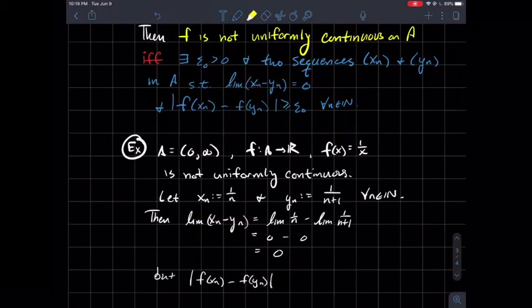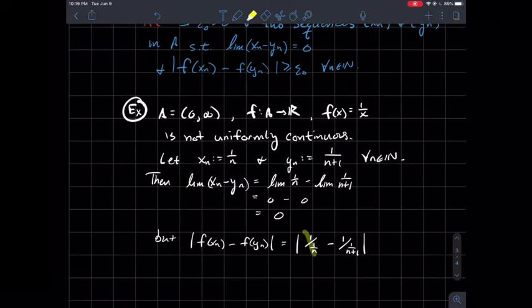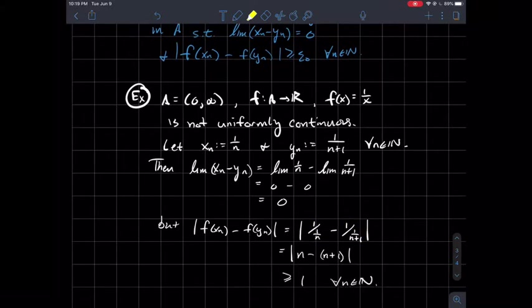Now let's think about the outputs. What happens when you plug in 1/n and 1/(n+1) into this function f(x) = 1/x? Well, that just takes the reciprocal of those numbers. If I take the reciprocal of 1/n and the reciprocal of 1/(n+1), that's just n minus (n+1), and you get 1. So in particular, the outputs of these two sequences is never going to be closer than one. These y values never get within one of each other.